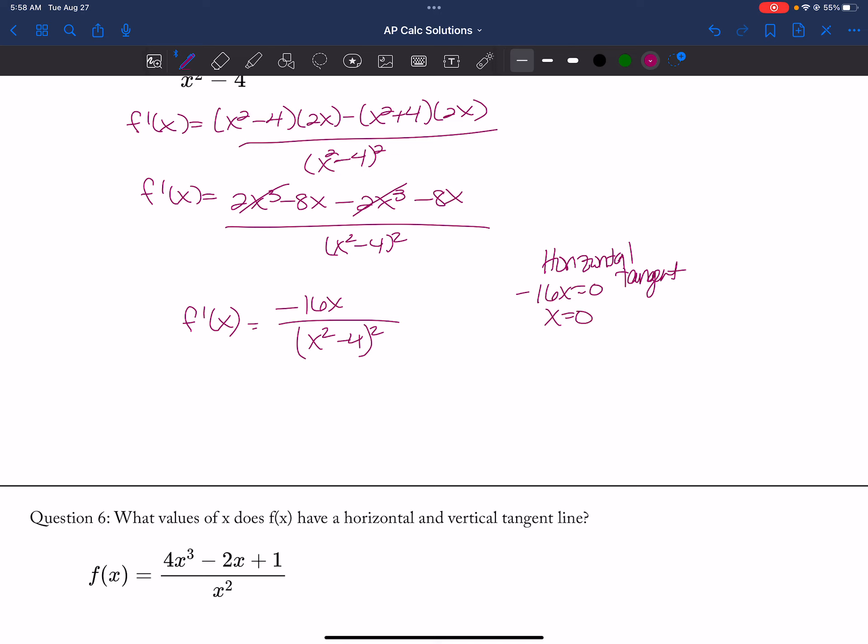So x is equal to 0, and then my vertical tangent is x squared minus 4 is equal to 0, so x squared is equal to 4, so x is equal to plus or minus 2. And that is it for all the odd-numbered questions.